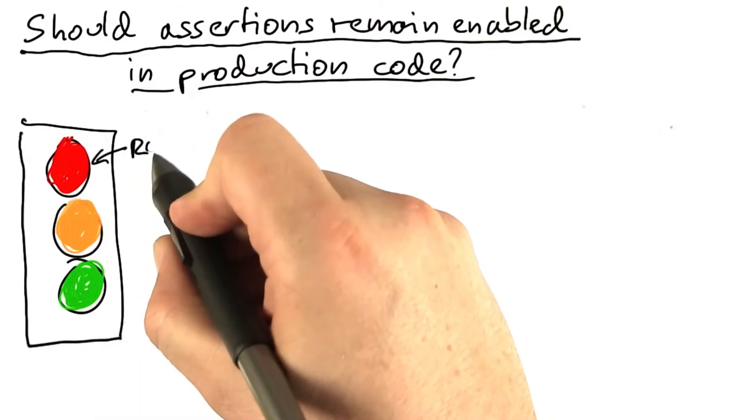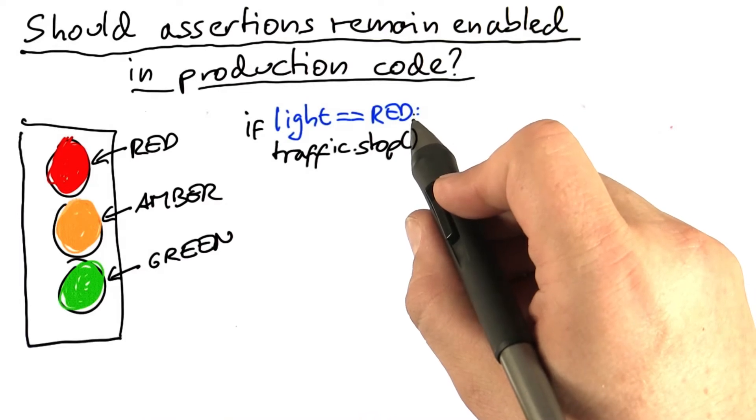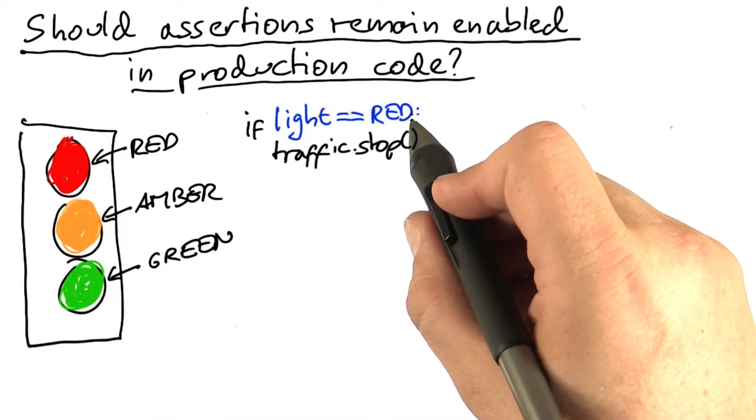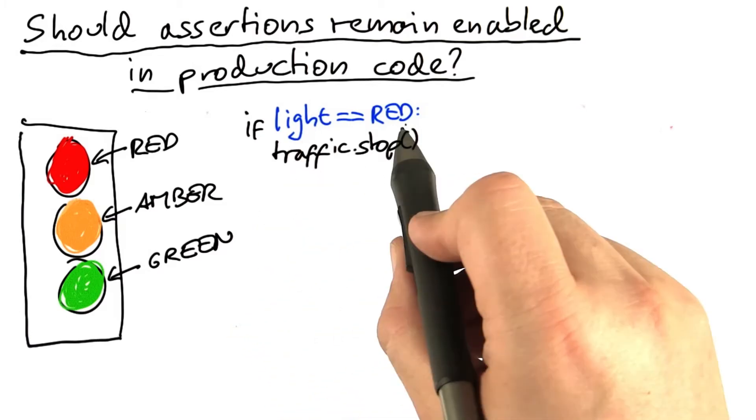We have three colors in here: red, amber, and green. Now we have a little piece of code in here which impacts the traffic based on the traffic light. Let's assume this is part of some traffic simulation.